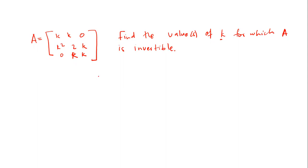When we talk about an invertible matrix, we are talking about a matrix whose determinant is non-zero. When we talk about a matrix that is non-invertible, we are talking about a matrix whose determinant is equal to zero.